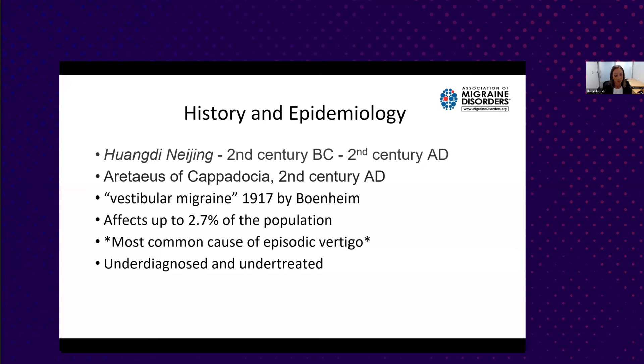Vestibular migraine—the symptoms were first described in the Huangdi Neijing, the Chinese medicine, some of the earliest writings there. And then by Aretaeus of Cappadocia, well-known Greek physicians, who described these disorders of episodic vertigo with ringing in the ears, headache, and visual changes. There are a lot of different terms that have been used, like migraine-associated vertigo. The term vestibular migraine was first introduced in the early 1900s, and that's the official term we use now.